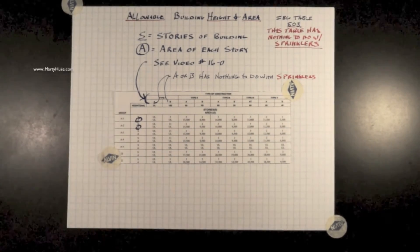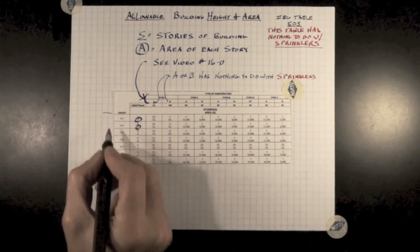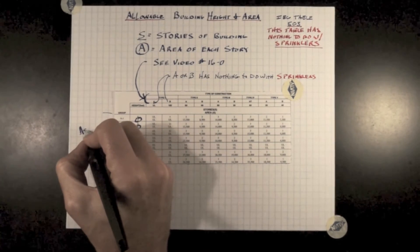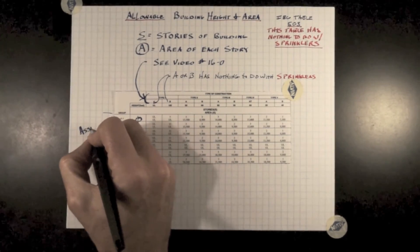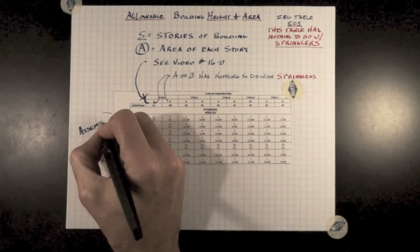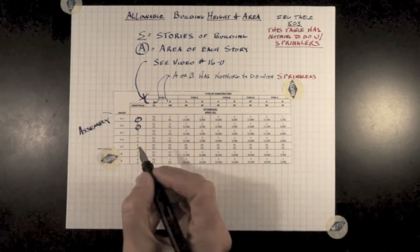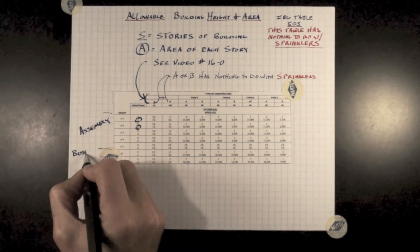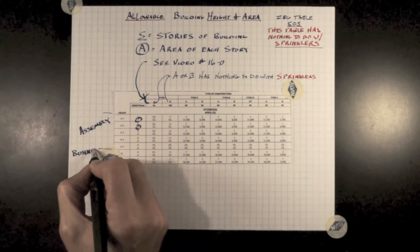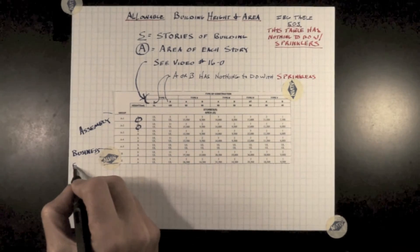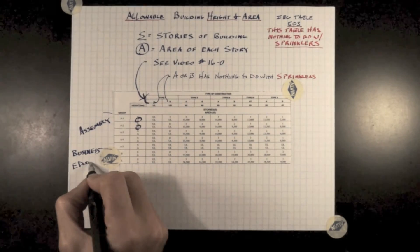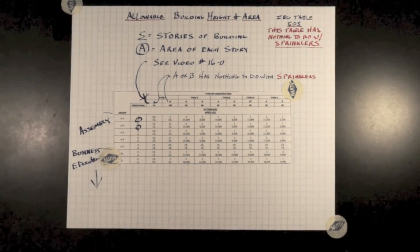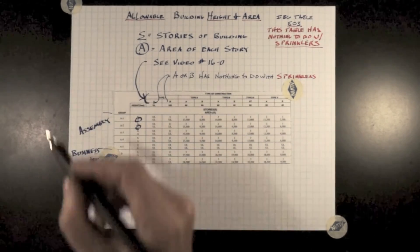This here is the occupancy type. On the left-hand side you have the occupancy type. These are the assembly building types. This one here is for business, and the bottom one here is for education. These all can be found in Section 300.